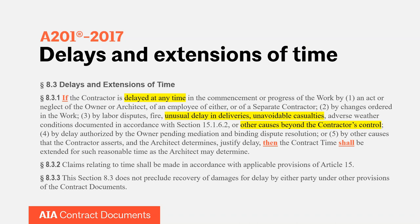An example of 'unusual delays in deliveries' would be Italian marble that's delayed. An 'unavoidable casualty' is a legally fancy term for an unavoidable accident outside the contractor's control. 'Other causes beyond the contractor's control' is a mini catch-all within subsection 3. Reading 8.3.1 with those triggers: 'If the contractor is delayed at any time in the commencement or progress of the work by unusual delays in deliveries, unavoidable casualties, or causes beyond the contractor's control, then the contract time shall be extended for such reasonable time as the architect may determine.'